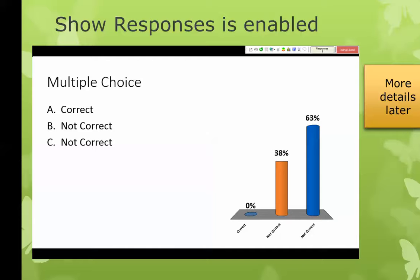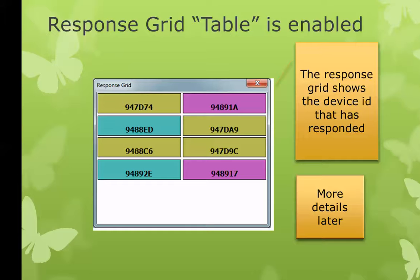Speaking of calling on students — if you say, 'Why didn't you answer with A, which is the correct answer?' when they see that they're in the majority, that other people answered that way also, they're much more likely to explain things like, 'Well, I didn't understand the question. I knew that concept, but the way the question was worded confused me.' So all kinds of good information comes out of this.